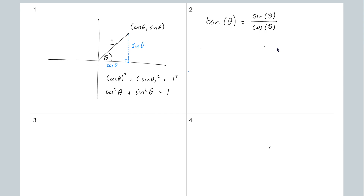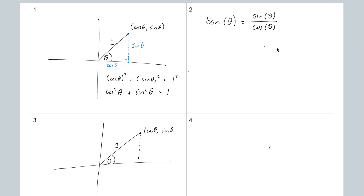The next one is called the double angle identities. We're going to look at the cosine and sine identities — there's also a tan double angle identity as well. So we're going to start by looking at the unit circle. That has angle theta and length one, with coordinates cos theta and sine theta as the xy coordinate.